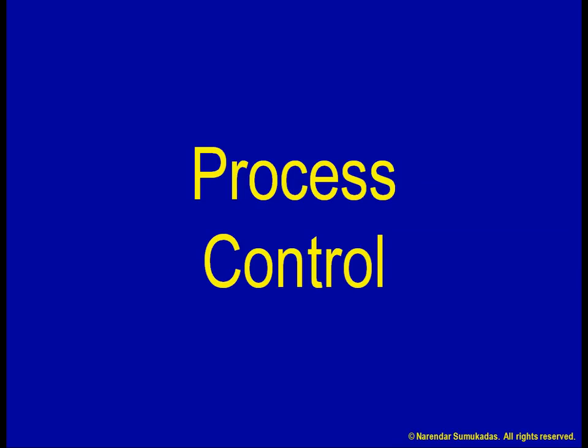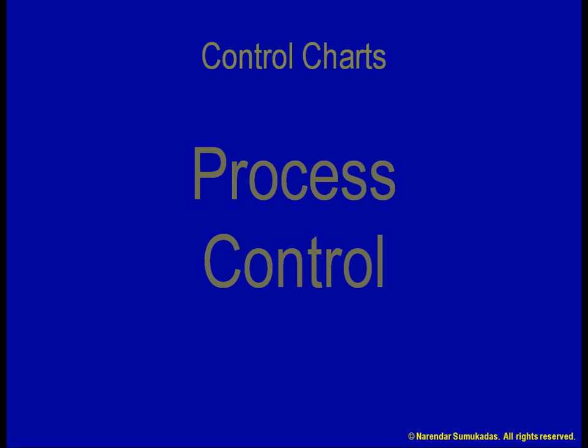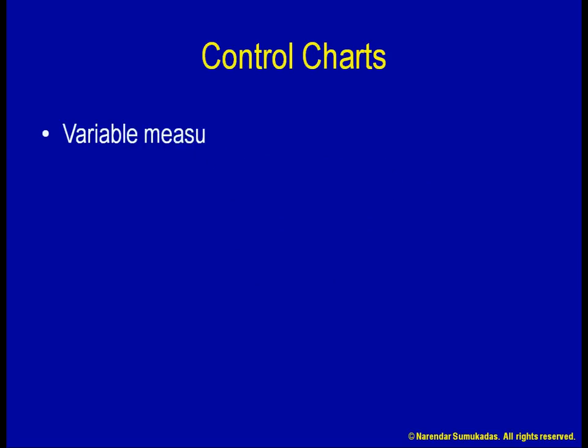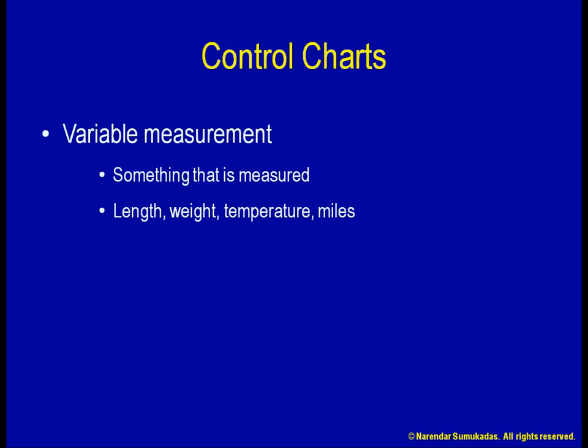Besides the X-bar and R charts we saw earlier, depending on the type of data we have, we might need to plot a slightly different kind of control chart. The X-bar and R charts are applicable for process measurements that are called variable measurements. You can think about variable measurements as things that are measured, such as length, weight, temperature, miles per gallon, etc.